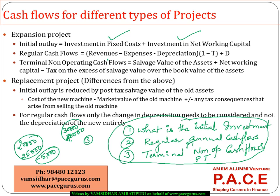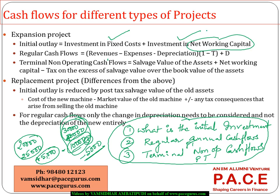If current liabilities increase by 10,000, that increases cash by 10,000. So the change in working capital: current assets increased by 5,000, current liabilities increased by 10,000 — the difference is negative 5,000, meaning net working capital investment is positive, which is a cash inflow. If net working capital comes out positive, it is a net cash outflow.